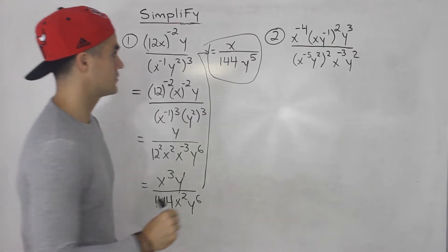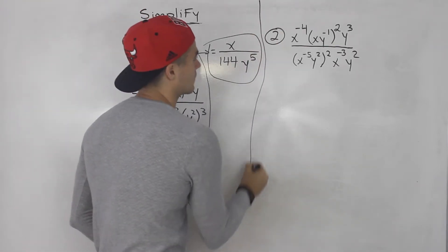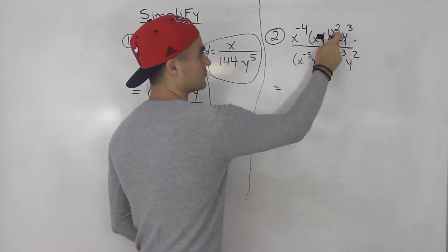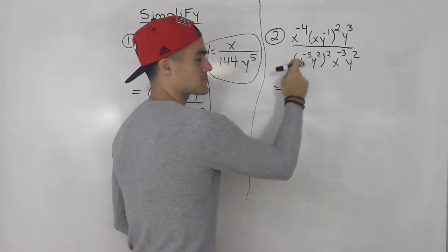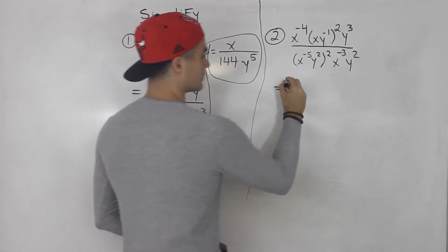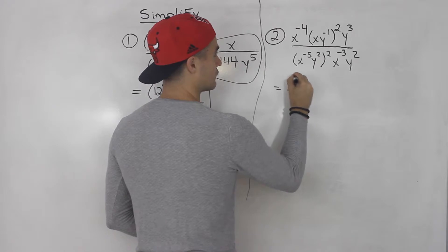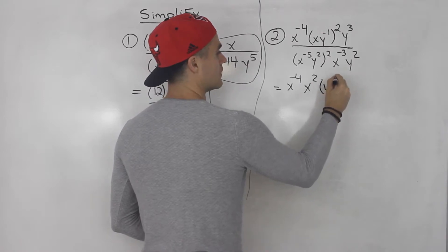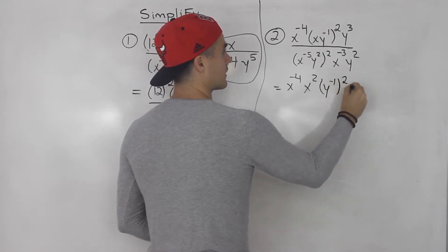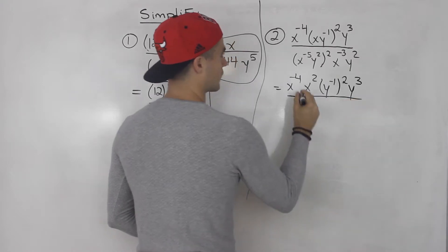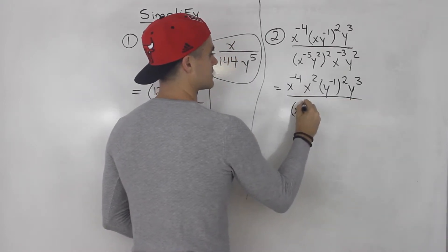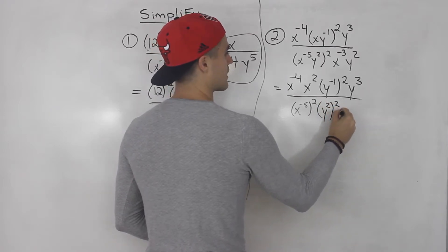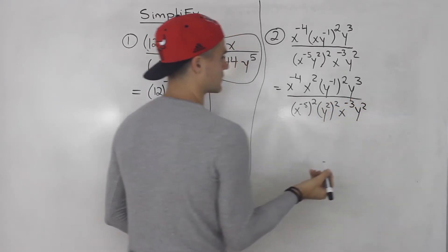Number two — I'm just going to distribute this exponent and that exponent inside both brackets. So x to the negative four: this x is going to be squared, and this y to the negative one is going to be squared. Then I'll have y to the three, all over: x to the negative five will be squared, this y will be squared, x to the negative three, and this y squared.